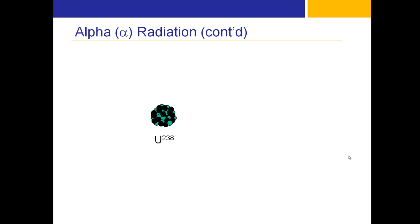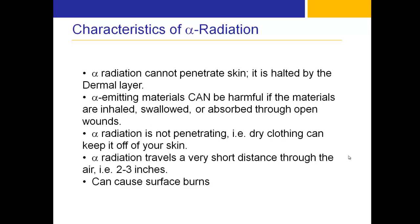When uranium-238 gives off that alpha particle, it becomes a slightly lighter element — in this case, going from uranium-238 to thorium-234. That alpha radiation has certain characteristics. In nuclear terms, two protons and two neutrons are pretty heavy, so it doesn't travel very far.